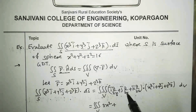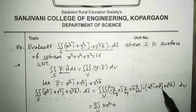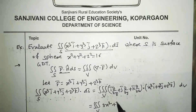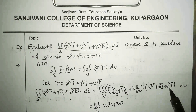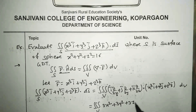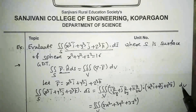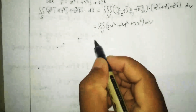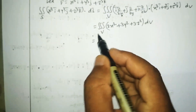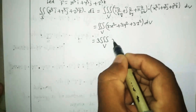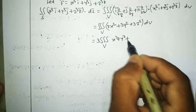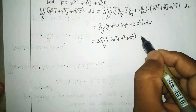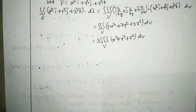The derivative of y³ with respect to y is 3y², and similarly the derivative of z³ with respect to z is 3z². So the divergence del·F-bar = 3x² + 3y² + 3z². Taking 3 as a common factor gives 3 times the triple integral over V of (x² + y² + z²) dV.